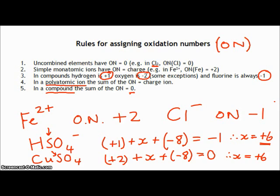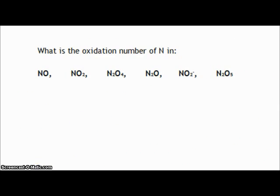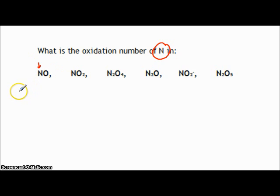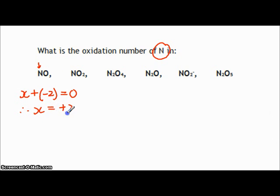Those are the basic rules for assigning oxidation numbers. Let's try them out — these should be in your notes, so work along with me. This question asks us to find the oxidation number of nitrogen in each compound. Starting with NO — a neutral compound, so they must sum to zero. Nitrogen is x; adding oxygen at minus two must give zero, so x equals plus two. In NO₂, nitrogen is x again.